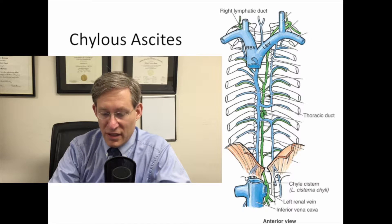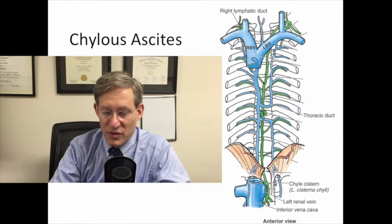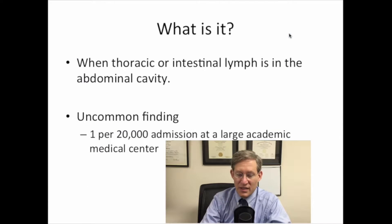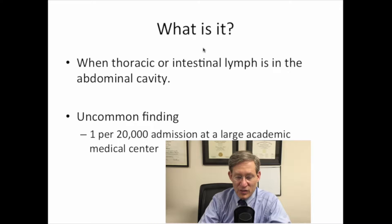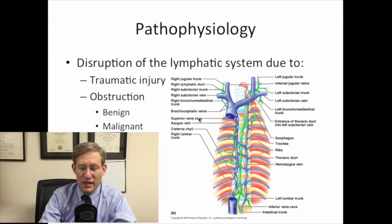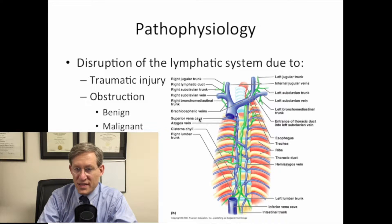As you can see here, I've got a picture of some of the relevant clinical anatomy with the thoracic duct and how it goes back up into the subclavian vein. Chylos ascites is defined as thoracic or intestinal lymph present in the abdominal cavity, and as you can see here, it's uncommon.